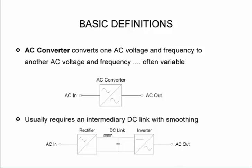In an AC converter where it converts one AC voltage and frequency to another AC voltage and frequency, there is normally an intermediary DC link with some smoothing. If you take the example of a variable speed drive it can have a single phase input that will then be rectified, then have a DC link, and that DC with the inverter will then be converted to a single or a three phase output supply.